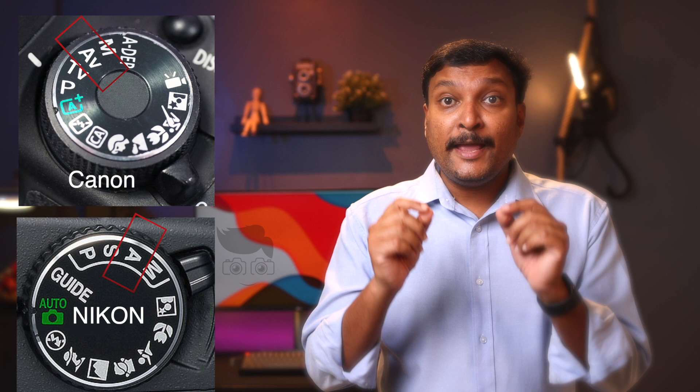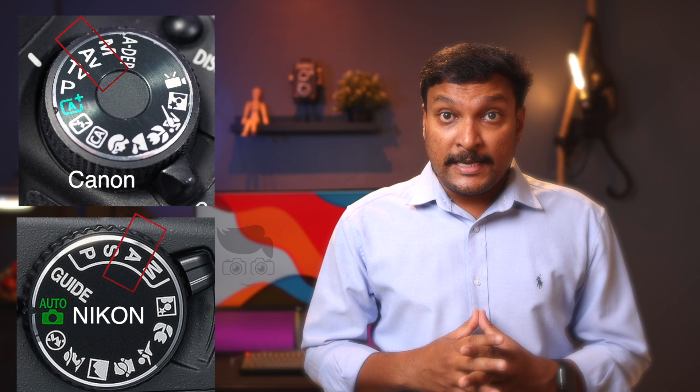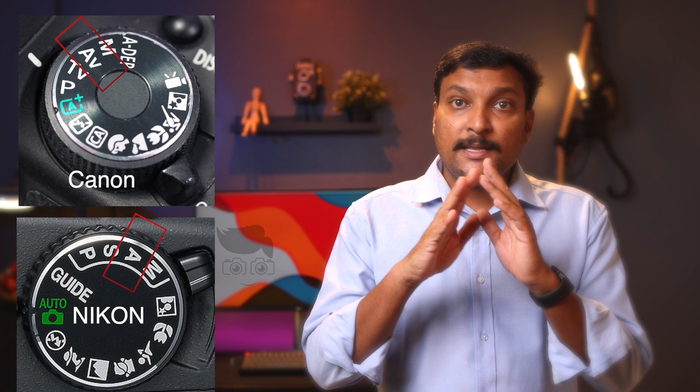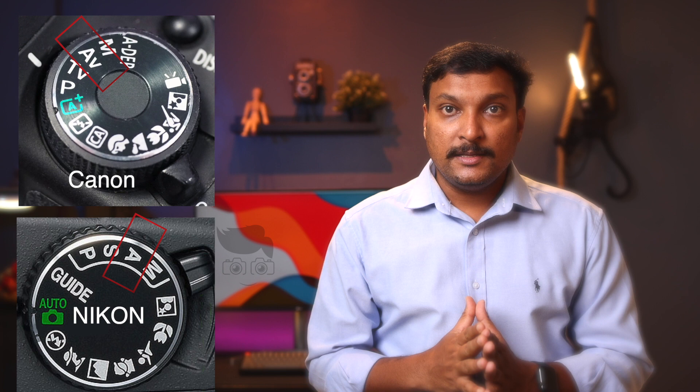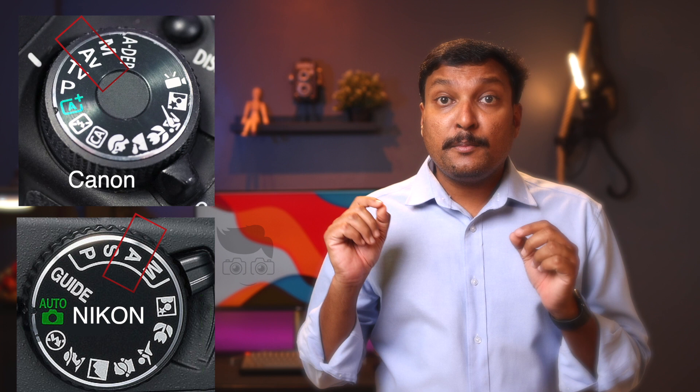The second mode is AV mode. On a Canon camera it is AV, which stands for aperture value. On a Nikon camera it is A, which also stands for aperture value. In this mode, you control the aperture value of the camera, while the camera handles the other settings like shutter speed, ISO, and white balance.